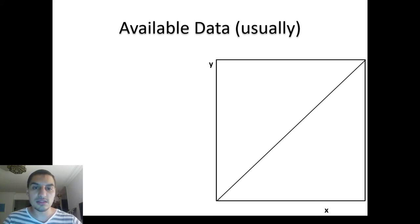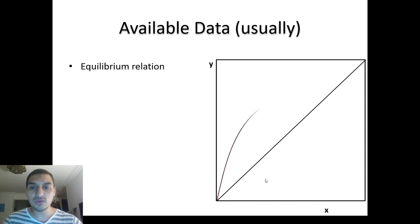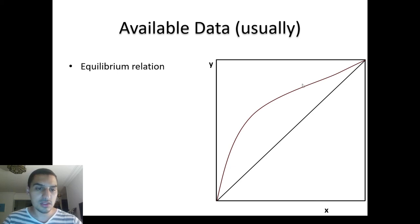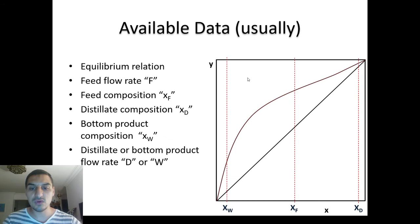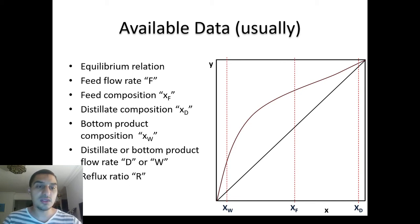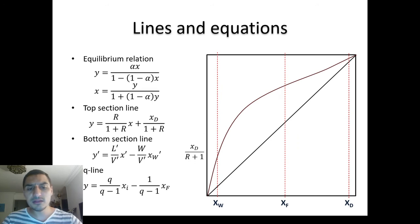What we need to draw is an XY diagram where Y is the mole fraction in the vapor phase and X is the mole fraction in the liquid phase, both for the more volatile component. We draw the 45-degree line and the equilibrium relation, which is obtained experimentally. We know the feed composition X_feed, the distillate composition X_d, the bottoms composition X_w, and the reflux ratio.